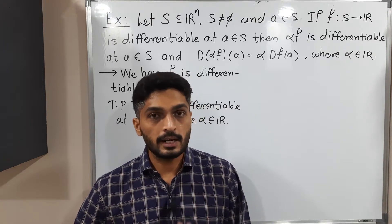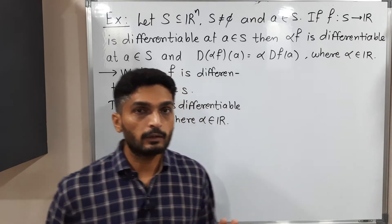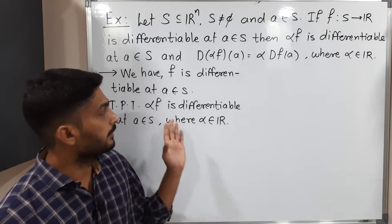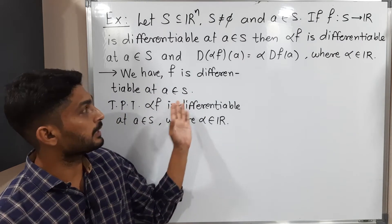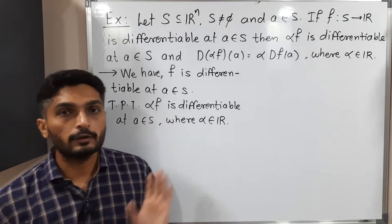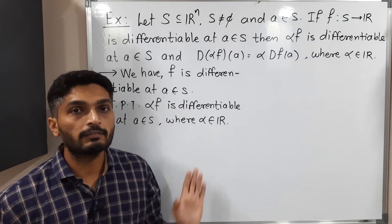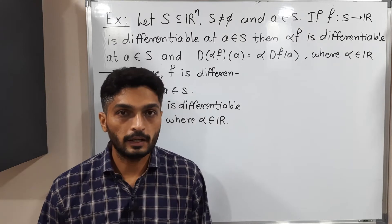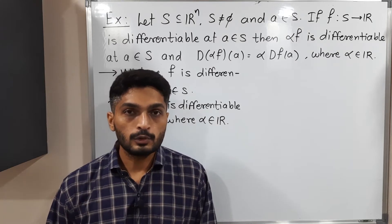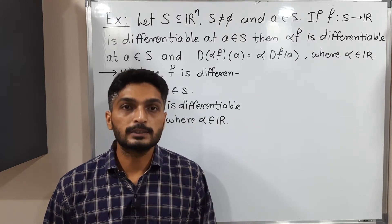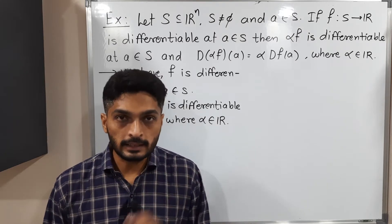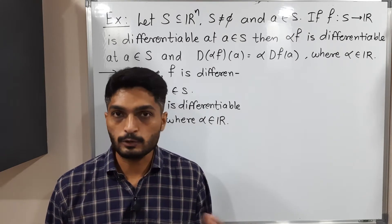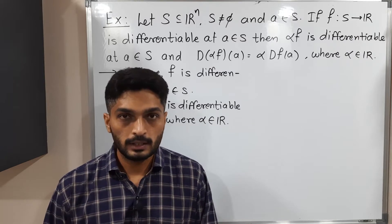Let us start with the given information: F is differentiable at A, and we need to prove that αF is differentiable at A. There will be two possibilities — either α is zero, or α is non-zero.